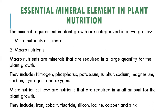Macronutrients are minerals required in large quantities for plant growth. They include nitrogen, phosphorus, potassium, sulfur, sodium, magnesium, calcium, hydrogen, and oxygen. Micronutrients are nutrients required in small amounts for plant growth. They include iron, cobalt, fluoride, silicon, iodine, copper, and zinc.